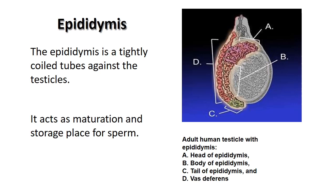The second internal genital organ is the epididymis — a tightly coiled tube lying against the testicles. It acts as a site for maturation and storage of sperm. The epididymis has four parts: the head, the body, the tail, and the tail converts into the vas deferens.